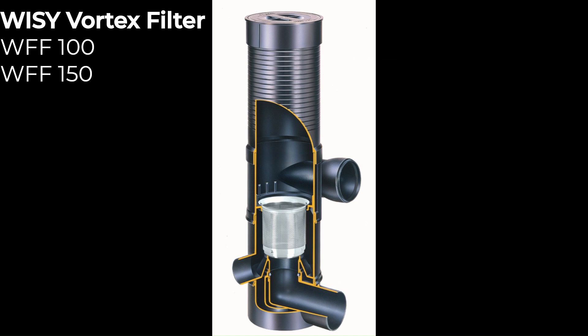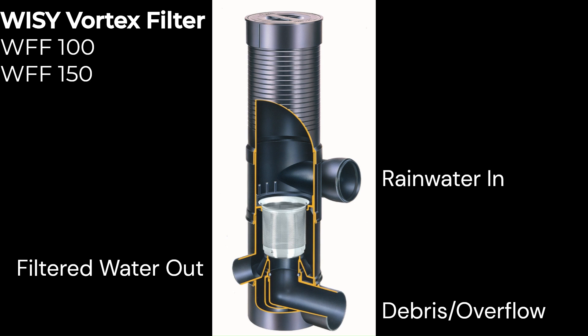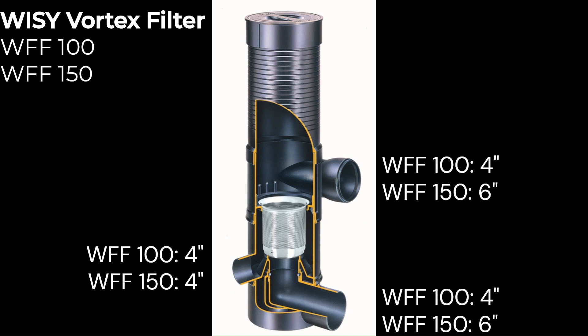The vortex filter has three connections: a rainwater inlet, a filtered water outlet, and a debris and overflow outlet. The size of these connections will depend on your model, so it is important to know which model you are installing so that you have pipe and fittings of the correct size.